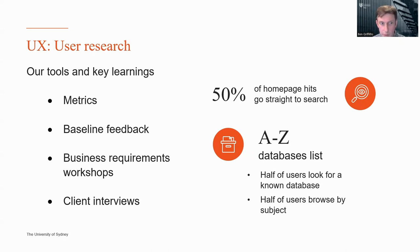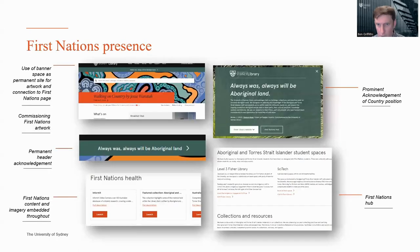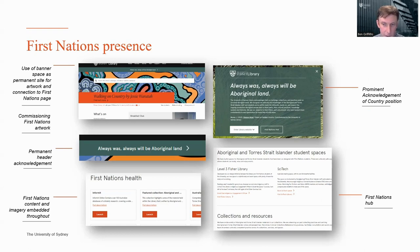We also ran business requirements workshops with staff who were users of the website as well as stakeholders in it, and we did interviews with clients, which was useful for identifying pain points and opportunities for improvement. Another significant component of our process was led by the library's Indigenous engagement officer and focused on a visible and meaningful First Nations digital presence within the new site. First Nations refers to Indigenous Australians — the Aboriginal and Torres Strait Islander peoples who are native to the lands upon which the University of Sydney resides. The initiative involved extensive consultation with 41 participants, 96% being Indigenous staff and students, and we're really happy with the outcomes, which can be seen across many areas of the new website.